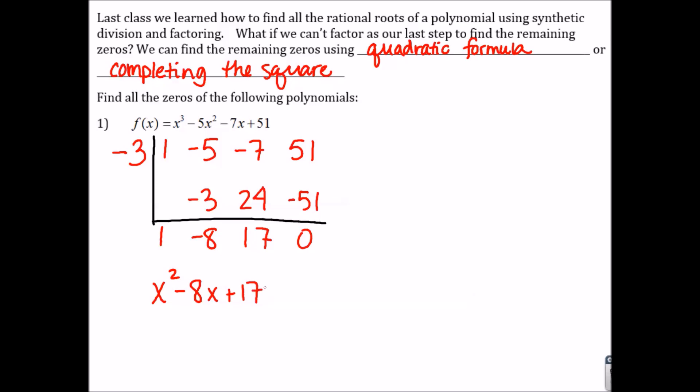We want to solve this quadratic. Clearly, there are no numbers that multiply to 17 and add up to negative 8. So, we either need to use quadratic formula or completing the square. I'm going to go ahead and use completing the square with this problem — you could use either.